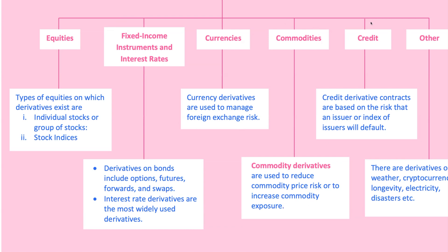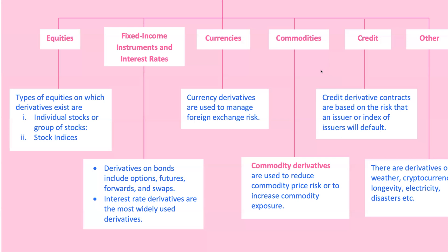Lastly, we have credit derivatives like credit default swaps, or CDS, which act like insurance against a borrower's default. Imagine holding a bond issued by a company you think might struggle financially. By buying a CDS, you're protected from the company defaulting on the bond, as the swap seller will compensate for losses in such cases.